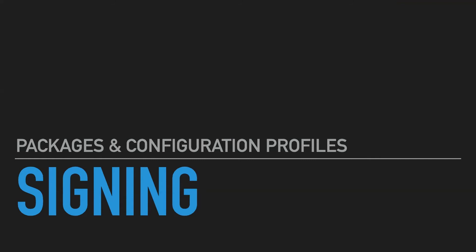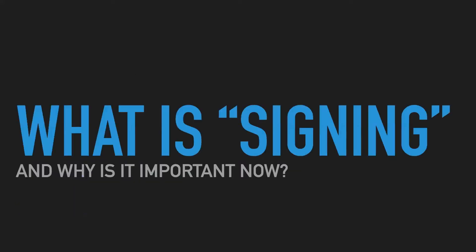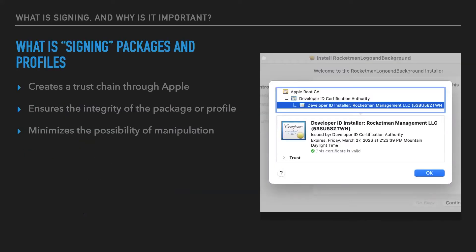Many of us have probably been doing this for some time now, and it's going to become ever more important going forward with Apple, particularly with the M1s. What is signing? It's a form of validation. Signing a package or a configuration profile ensures the integrity of a package or configuration profile, minimizing the possibility of manipulation post its initial creation. Signing creates a linked chain of trust between Apple, Jamf, and the computer.